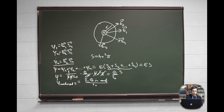We can compare Gauss's law to Coulomb's law. With Coulomb's law we get the electric field if we know the positions of charged particles. Using Gauss's law we can get the distribution of charges using the electric field. We can apply Gauss's law to some regular geometric solids which are positively charged.